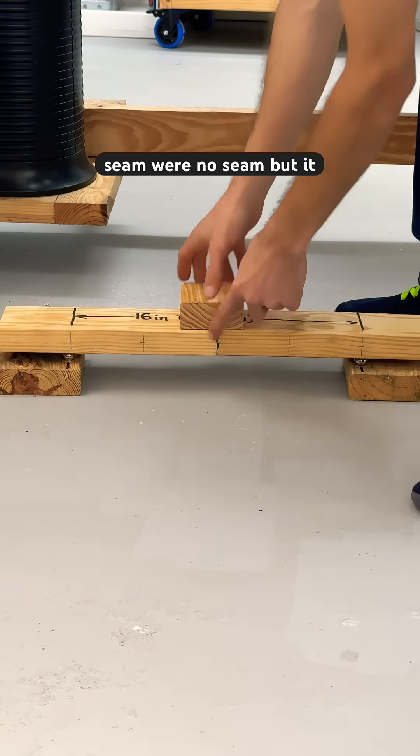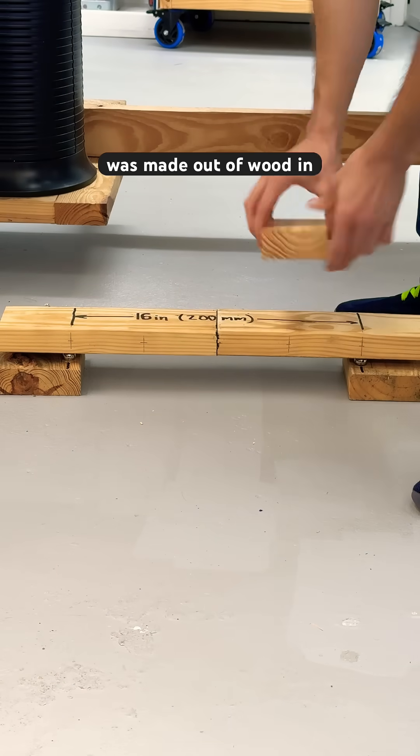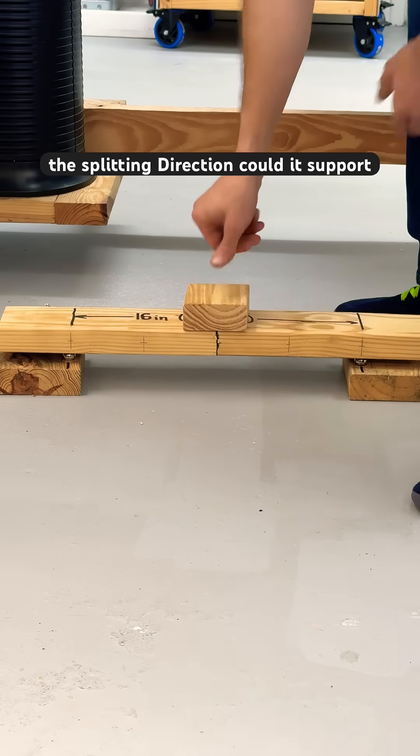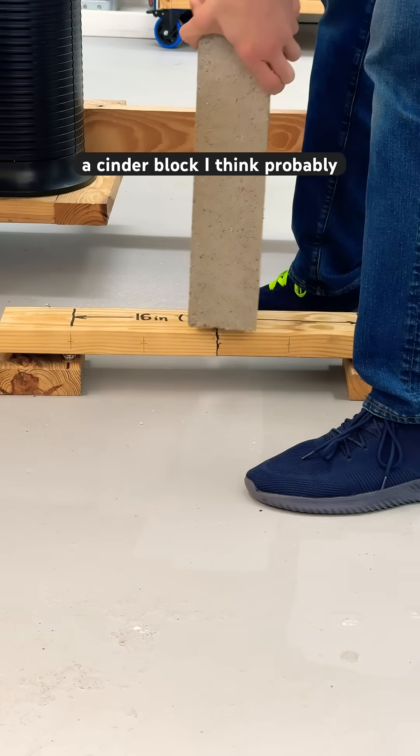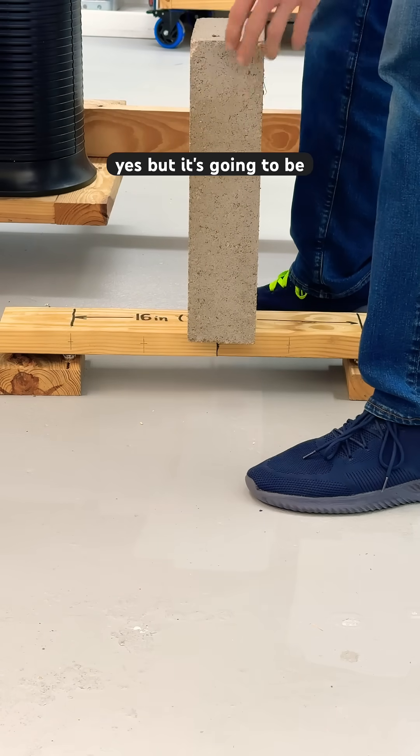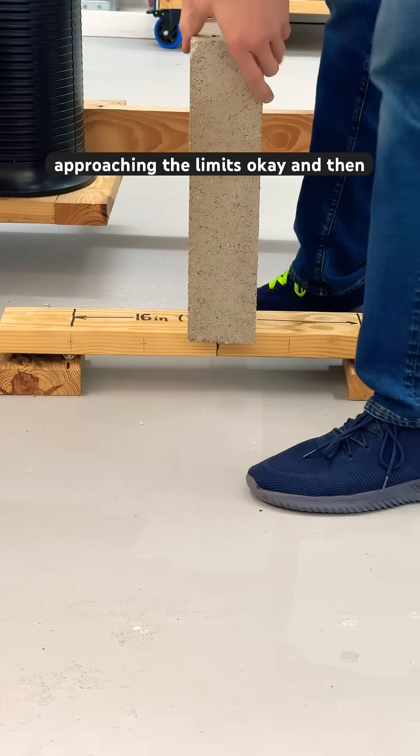So if this seam were no seam, but it was made out of wood in the splitting direction, could it support a cinder block? I think probably yes, but it's going to be approaching the limits.